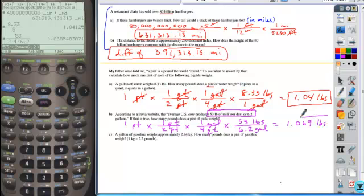close that off. When I hit enter, because I'm in auto mode, it'll give me my answer in decimal form since I used a decimal in my entry. And that's what I want anyway. So I get 1.069 approximately pounds.